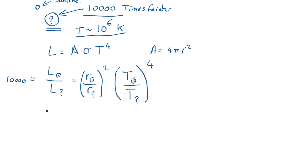So we know that R Sun over R mystery object squared equals L Sun over L mystery object. And now if we're taking this over the other side, the temperature over the other side, we have to invert it. So we get T mystery object over T Sun to the fourth power.